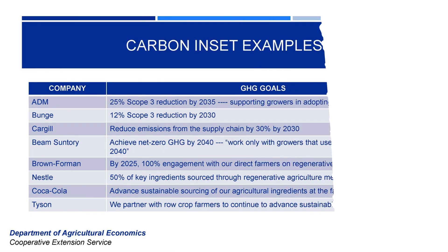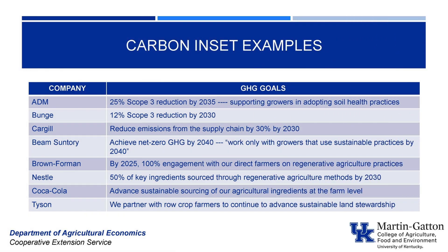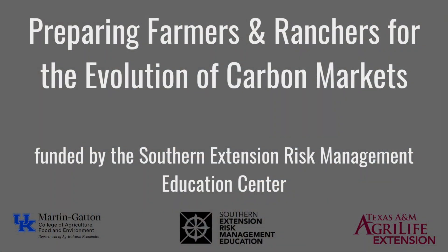One important thing to keep in mind is that farmers, ranchers, and folks in the agricultural industry have a place in both carbon inset and offset contracts. You're seeing a lot more carbon insetting for food and beverage companies — for example, Nestle and Bayer have carbon insetting programs. Farmers can participate voluntarily or sign a contract with a carbon offset company, generating carbon credits sold to companies outside agriculture entirely.